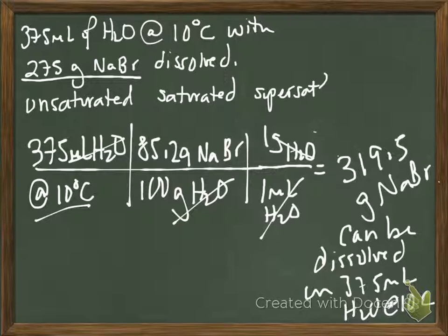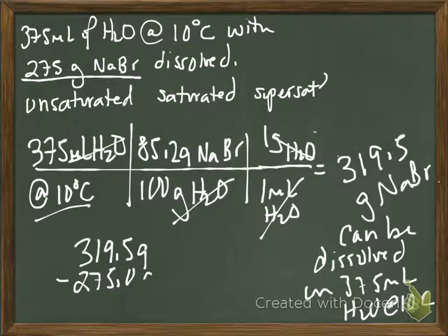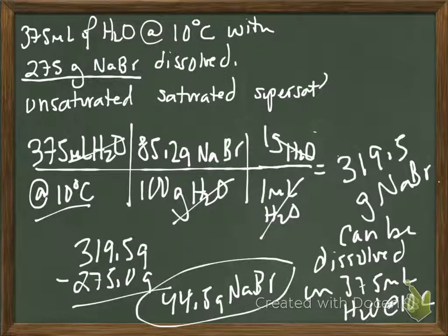We actually have a lot of room to add solute to this before we bump up against saturation. Another question I could ask is: how many more grams of solute could be dissolved under these conditions? That's a nice kind of question. From what you've figured out here, can you answer that? I'm getting 44.5. Yeah, less than 50. How do we get that? We could dissolve 319.5 grams and we already have 275 grams, so we get 44.5 grams of sodium bromide that we can still dissolve in there.